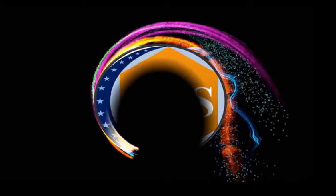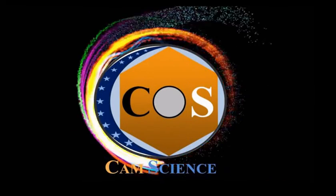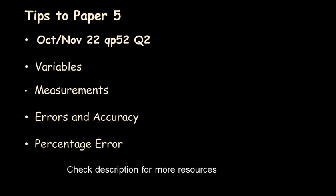It's chemistry and you are watching Gram Science. We will be solving 9701 A-levels chemistry paper 5, and in this video we will be solving the October/November 2022 series. We have already solved question 1, and in this video we will be solving question 2.